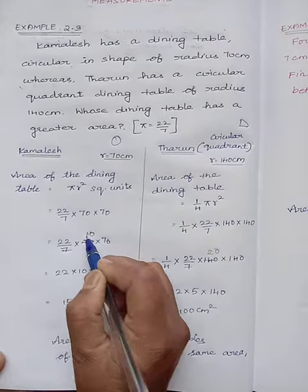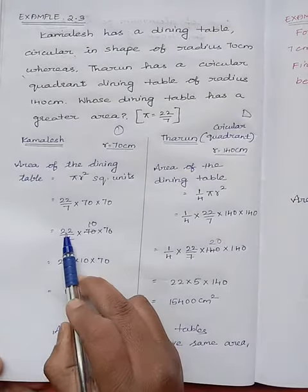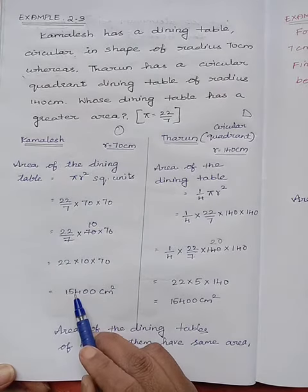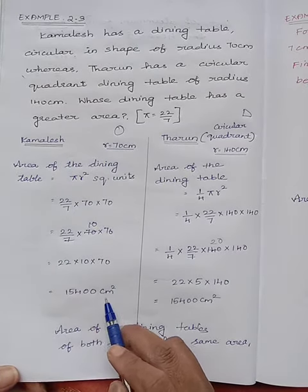7 divided 70, 10 times. So remaining you have 22 × 10 × 70. So multiplying you will get 15400 cm².